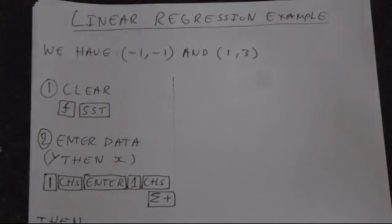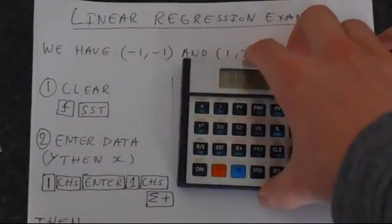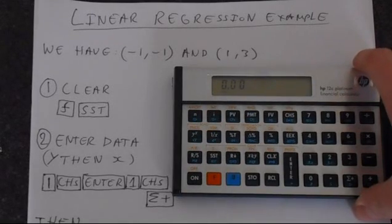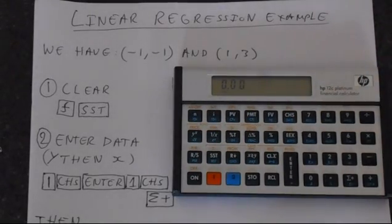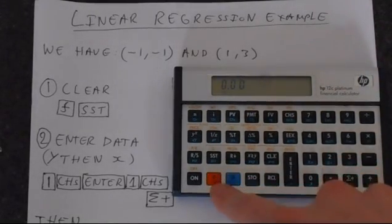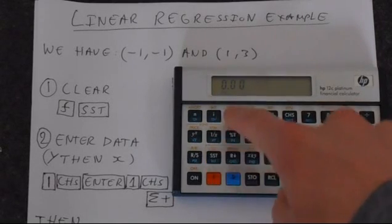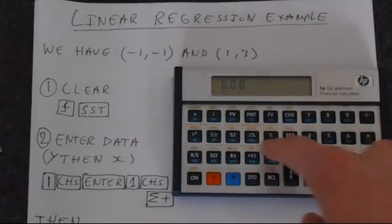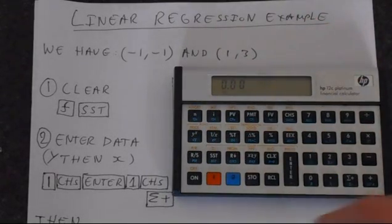So here's our calculator, and those are the data points rewritten at the top. The first thing we need to do is ensure that the memory is cleared. We're going to clear the stats memory by pressing F and then this SST button, which has got the sigma sign under the clear. That's the calculator cleared.